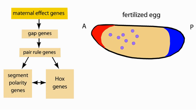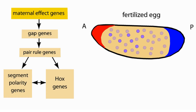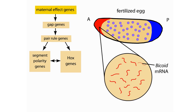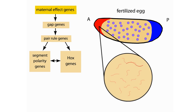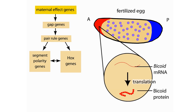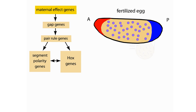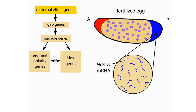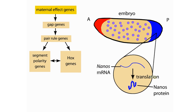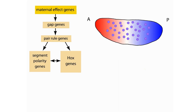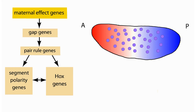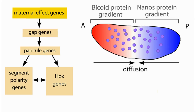After a normal egg is fertilized and laid, its nucleus begins to divide. During the early nuclear divisions, the developing embryo translates the bicoid mRNAs into proteins. It also translates the nanos mRNAs into proteins. At this point, the embryo has not yet partitioned into separate cells, and the proteins can diffuse freely, forming concentration gradients across the embryo.